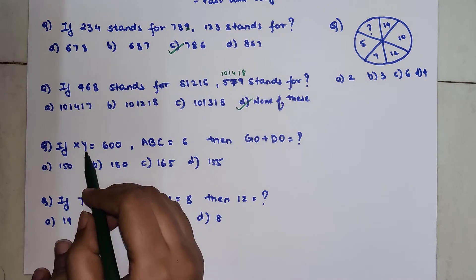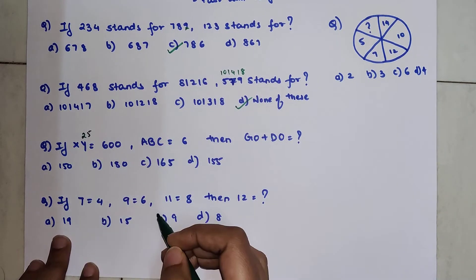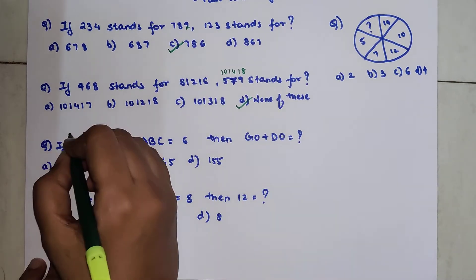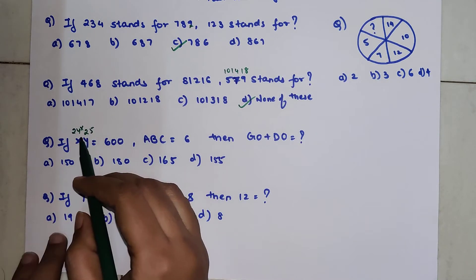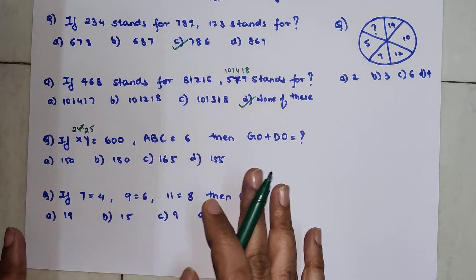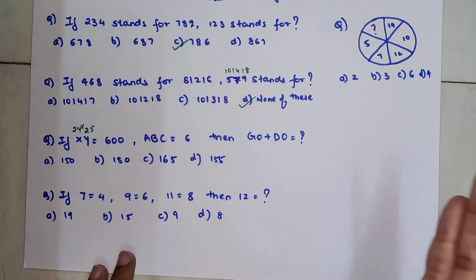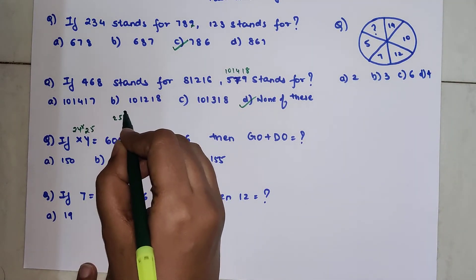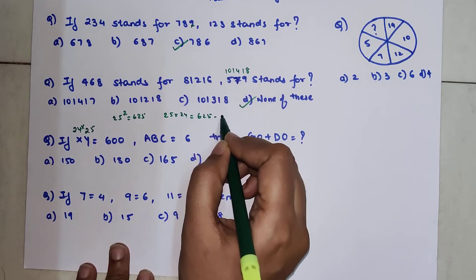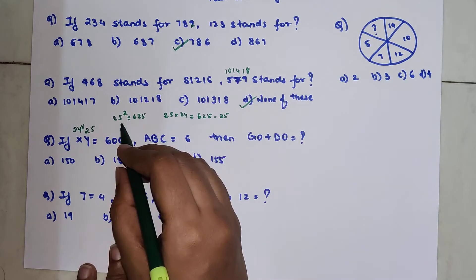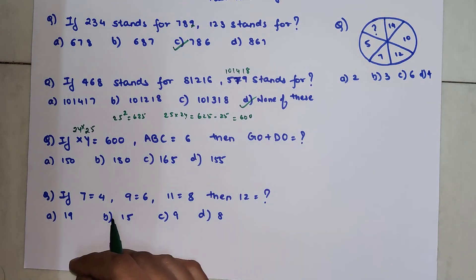So now over here we have X and Y. So now understand if Z is 26 then Y will be what 25 and if Y is 25 then X will be what 24th letter in the alphabet. And if you multiply these two, so now look over here 24 into 25. You don't have to actually go and multiply. We know 25 square is 625. So we need 24 into 25. So you just minus 25. We know 25 square is 625 and we need what? 25 into 24. So what we do is 625 minus 25 because 24 is one digit less than 25. So here your answer is what? 600.